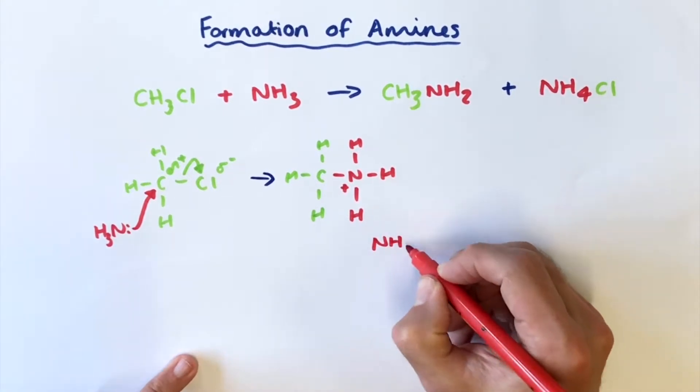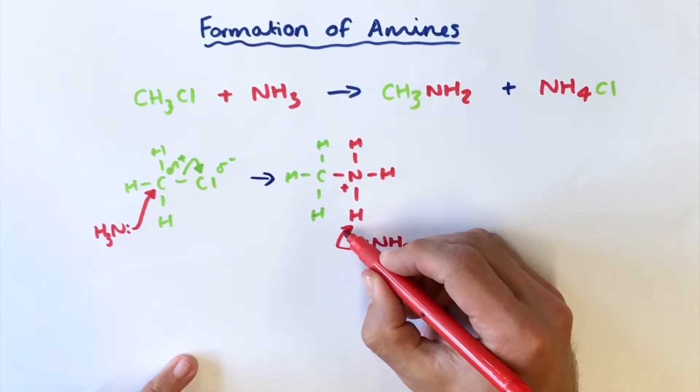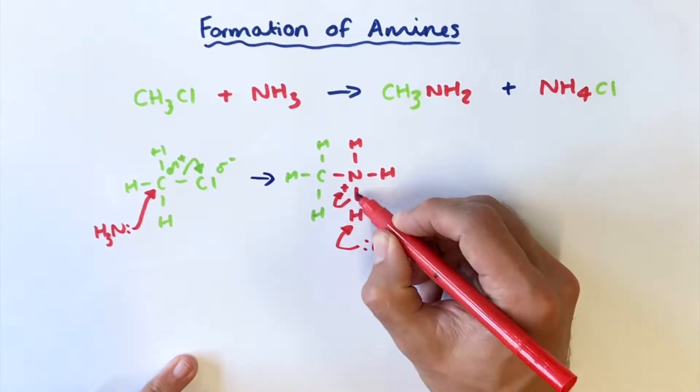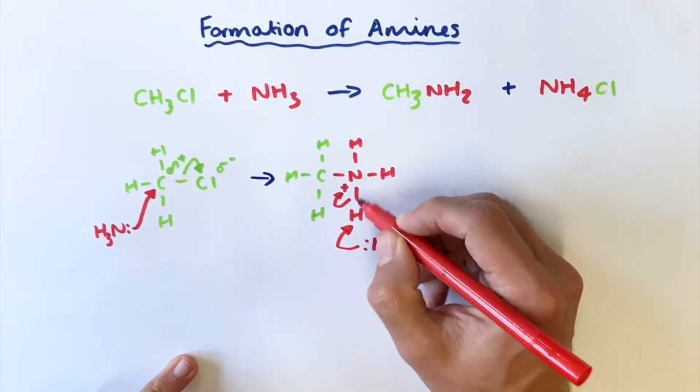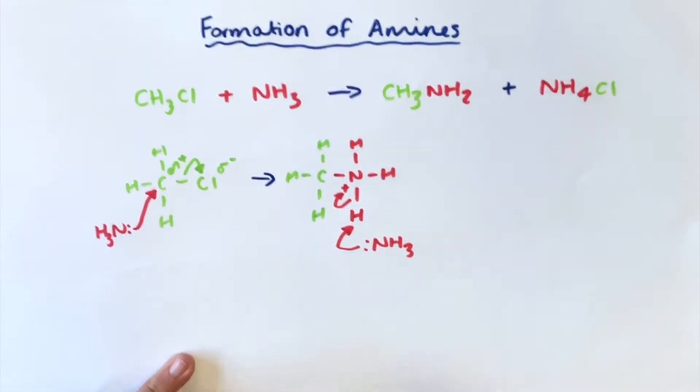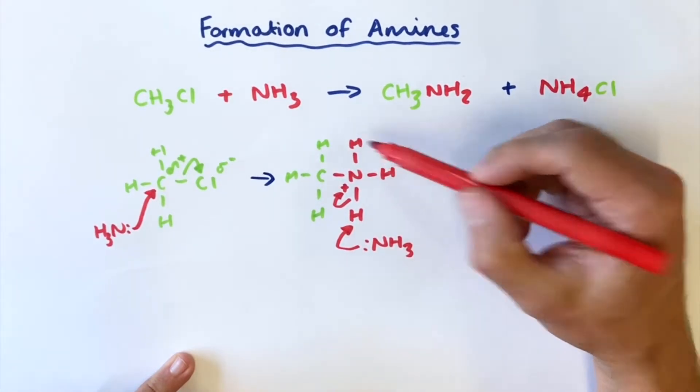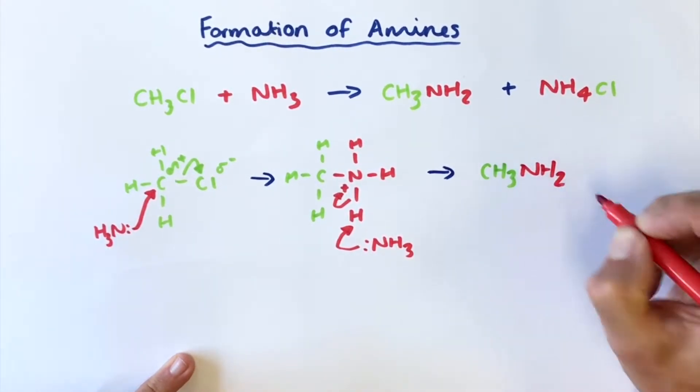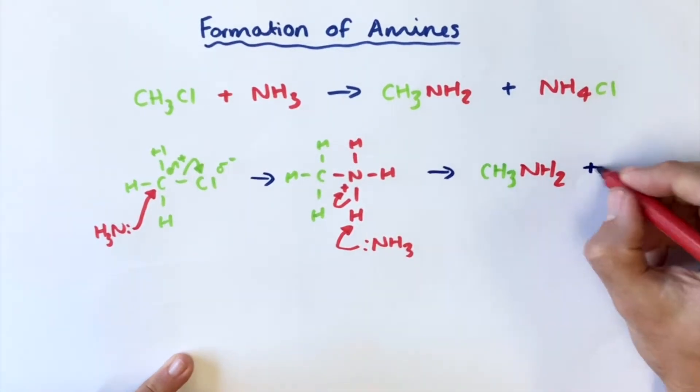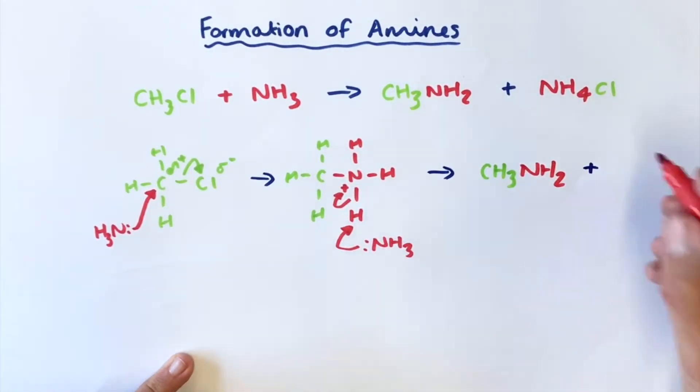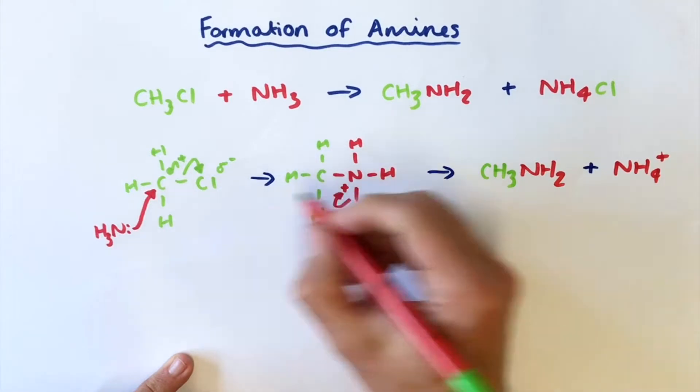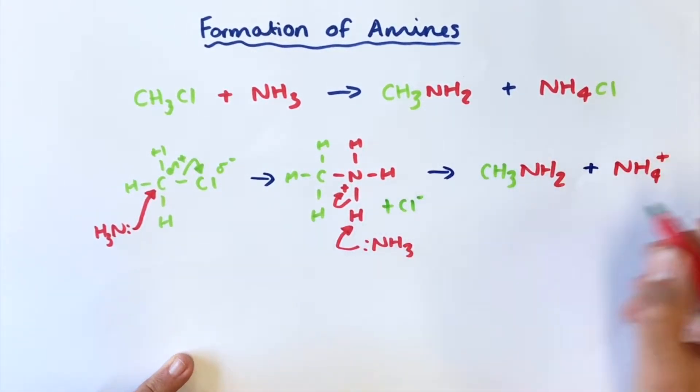Now some of the ammonia comes along and it's going to remove the proton. The electrons in this bond here are attracted towards the positive charge and this hydrogen is going to be removed. That gives us our two products. So we have the CH3 here from this part, the NH2 that's left over and that leaves us with ammonium chloride because this NH3 here taking away this proton gives us NH4+. And the chlorine that is lost here as it's substituted away forms the ammonium chloride.